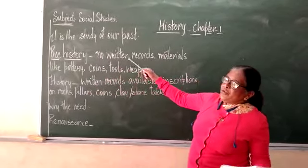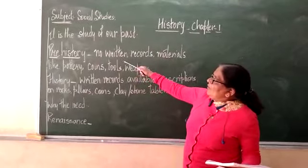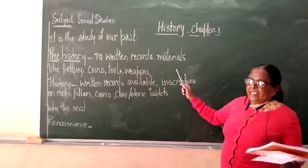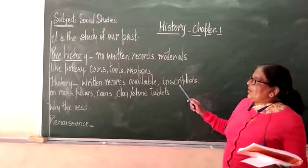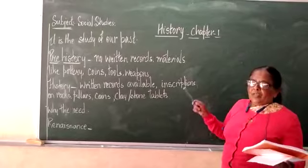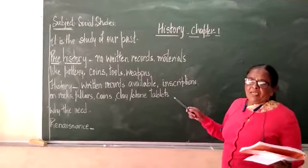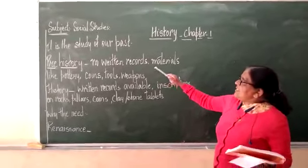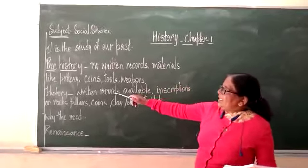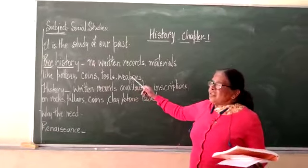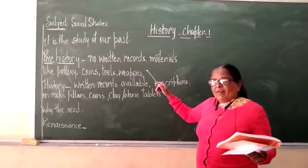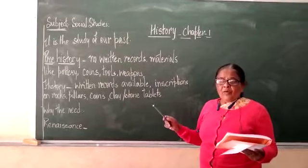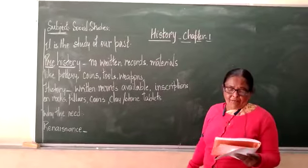Prehistory refers to that period of time for which there are no written records available. People didn't know how to write during those times. So, how do we come to know that something or some people existed during those times? We get some knowledge about prehistory from materials like pottery, coins, tools and weapons that have been removed from the earth by archaeologists. It's a very difficult task and they do it very carefully.